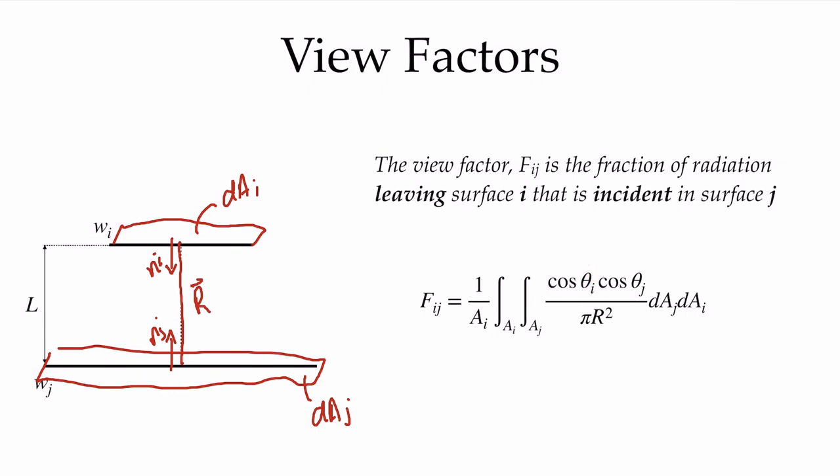It's a complicated integral — a double surface integral over the entire surface Ai and the entire surface Aj. For this reason it can sometimes be quite complicated to calculate analytically, and we'll be resorting to tables or other methods to find these view factors.